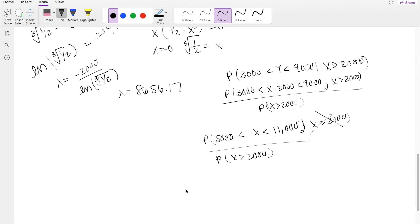And now that's not too bad, right? We basically did everything already. F of 11,000 minus the F of 5,000, because of the same logic here. If we want to find a range between 5,000 and 11,000, take the CDF of 11 and subtract the CDF of 5, and you get what we want, which is this here. And then this, again, is 1 minus the CDF of 2,000.